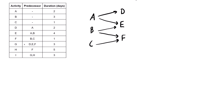Looking at activity G, it depends on D, E, and F. So we need a spot we can reach with arrows from all of those — D, E, and F are all leading into activity G. Activity H only depends on activity F, so we just put H over here with an arrow coming from F. And then activity I depends on G and H, so we put it at the end with G and H leading into it.